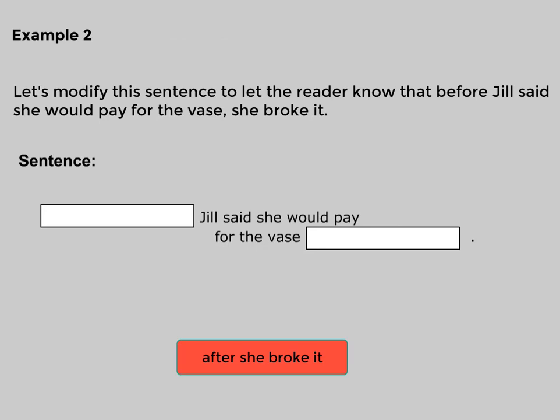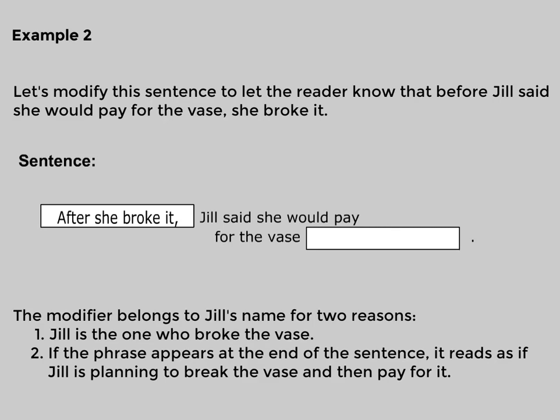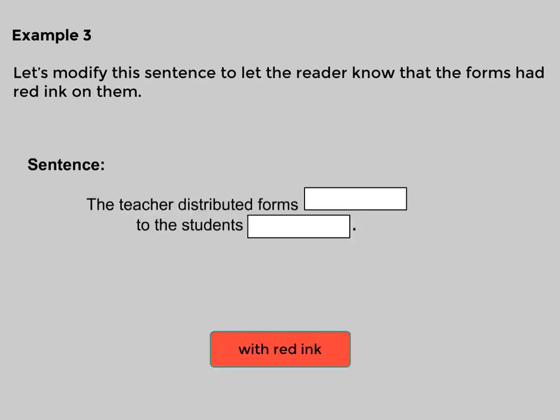Example two: let's modify this sentence to let the reader know that before Jill said she would pay for the vase, she broke it. Corrected: 'After she broke it, Jill said she would pay for the vase.' The modifier belongs next to Jill's name for two reasons: Jill is the one who broke the vase, and if the phrase appears at the end of the sentence, it reads as if Jill is planning to break the vase and then pay for it.